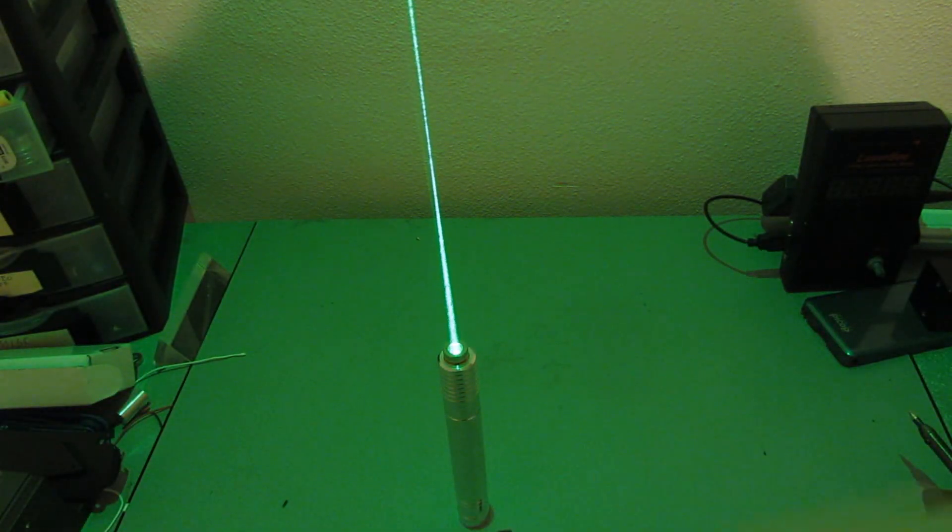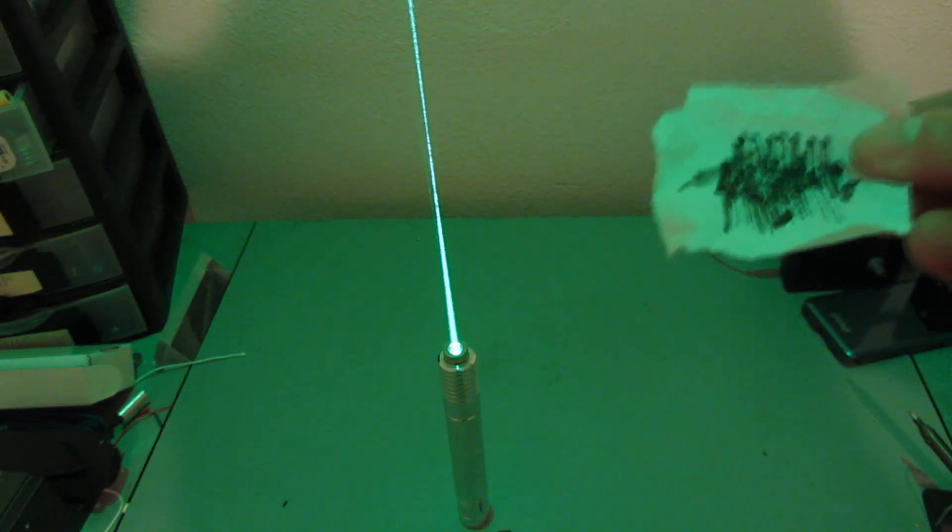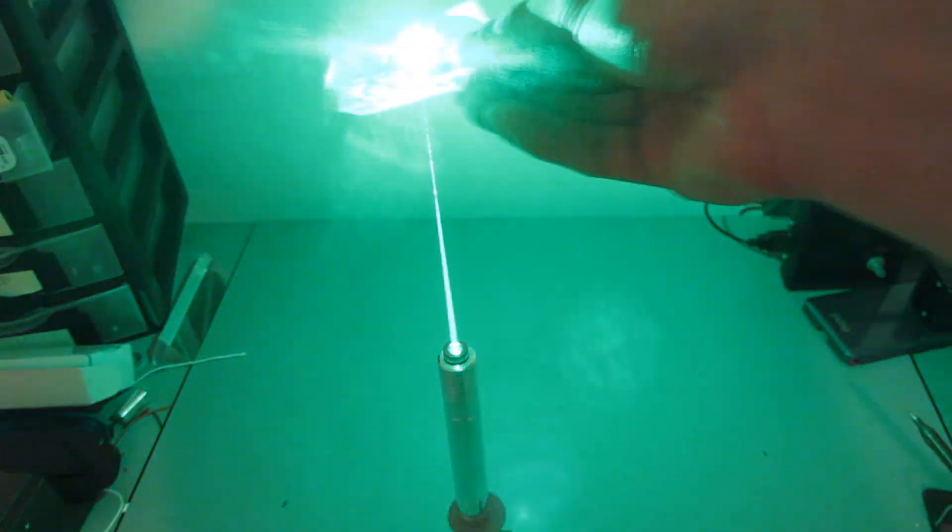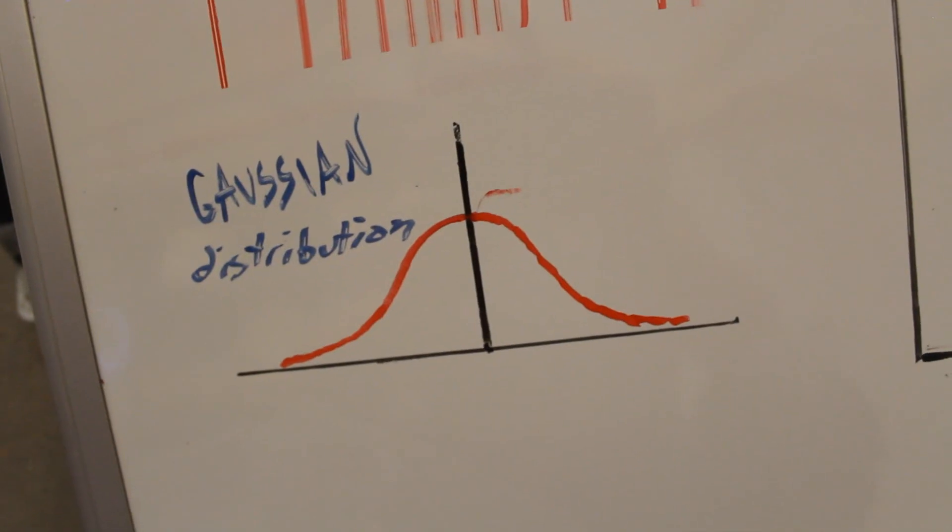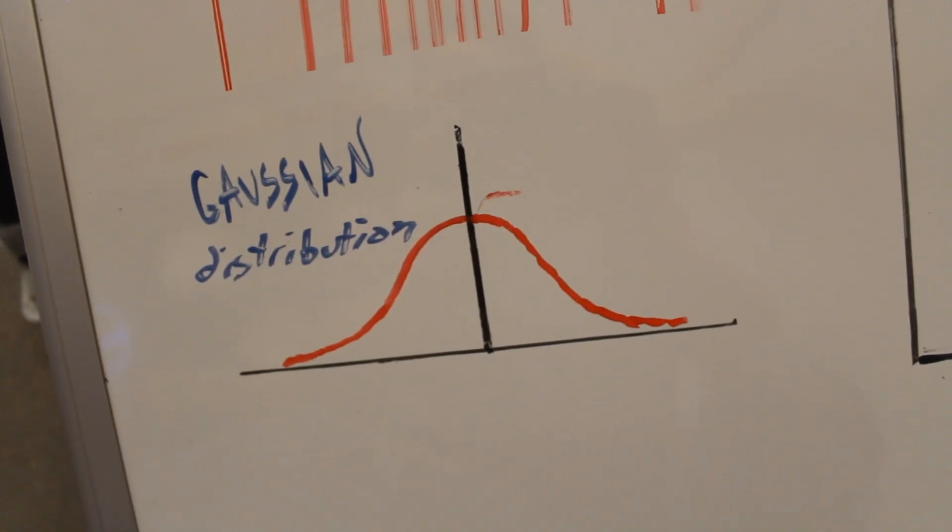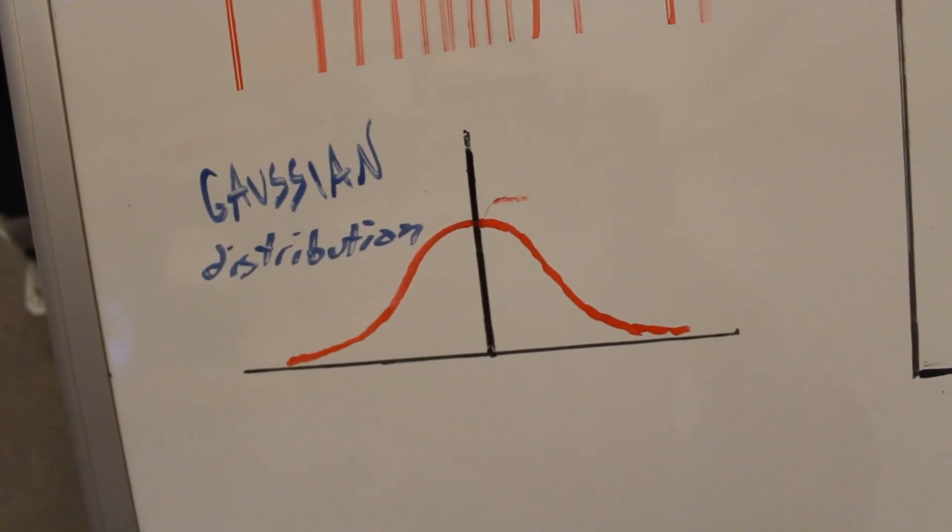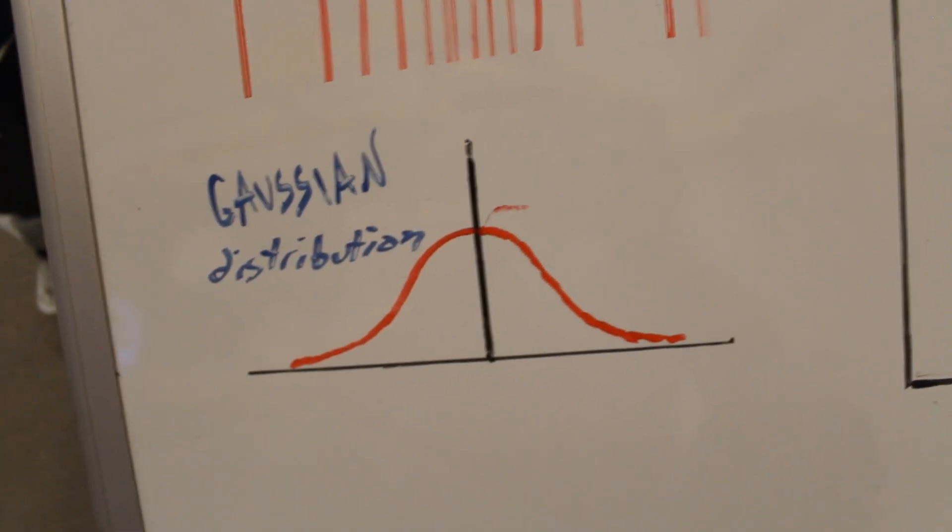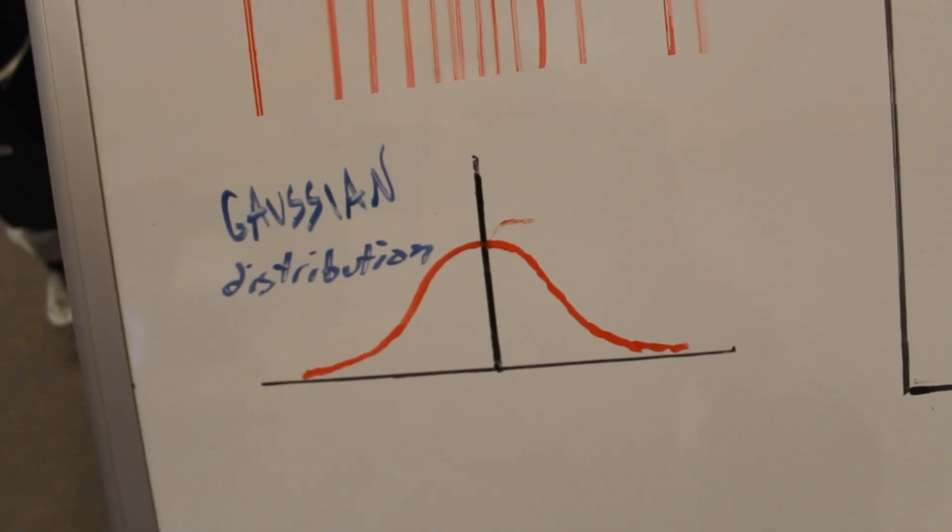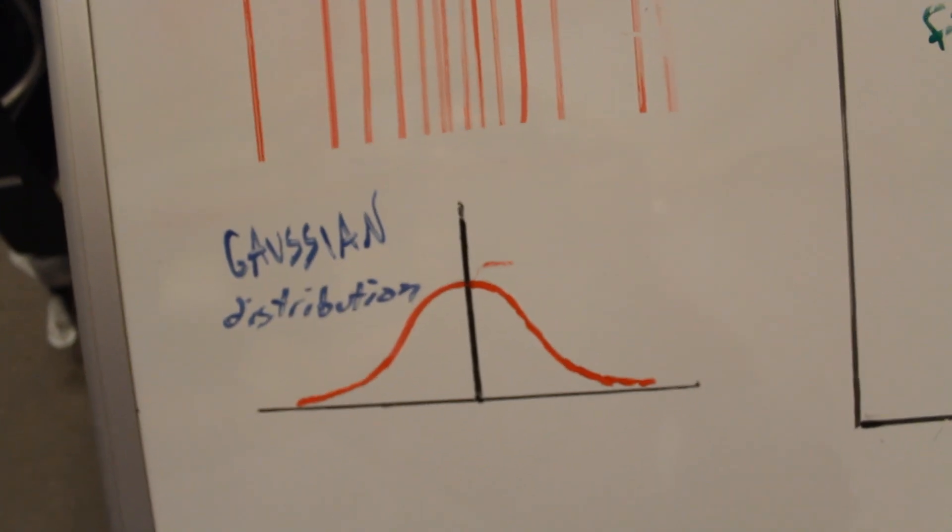Now, laser beams are not typically uniform across their diameter. In fact, usually the center of them has the strongest intensity of light, and then it tapers off towards the edges. Many times, the laser beam takes on a bell curve kind of distribution. So, it turns out that bell curves aren't just useful for separating the stupid people from the smart people in class. It actually shows up everywhere in nature, including laser beams.